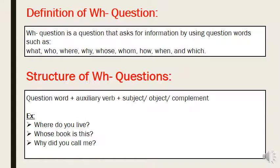What is the structure of WH questions? In order to ask a WH question, we have to write the question word plus the auxiliary verb plus the subject, object, or complement. For example: where do you live? Whose book is this? Why did you call me? All of these are question words.